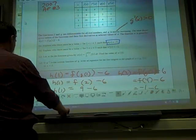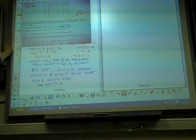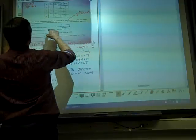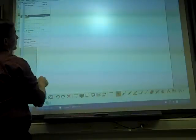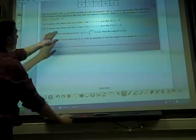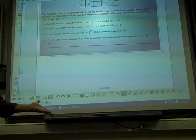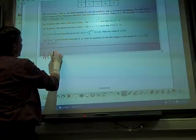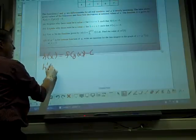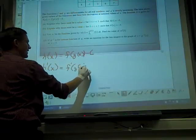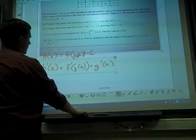Letter B. Explain why there must be a value C for 1 to 3 such that h prime of C equals negative 5. Well, the first thing I'm going to do is I better find the derivative. Do we all agree if h of x is f of g of x minus 6, derivative is h prime of x. That's a chain rule for the first one. F prime g of x times g prime x. The derivative of 6 is 0. So there's the derivative.